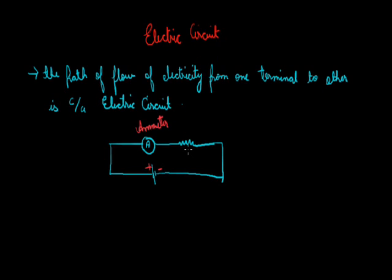These lines represent the resistance, i.e. R. There is also another device, i.e. voltmeter, which is used to measure the potential difference and it is always connected in parallel. If we want to connect it in this circuit, we can connect it across the resistance R. So this represents the voltmeter.